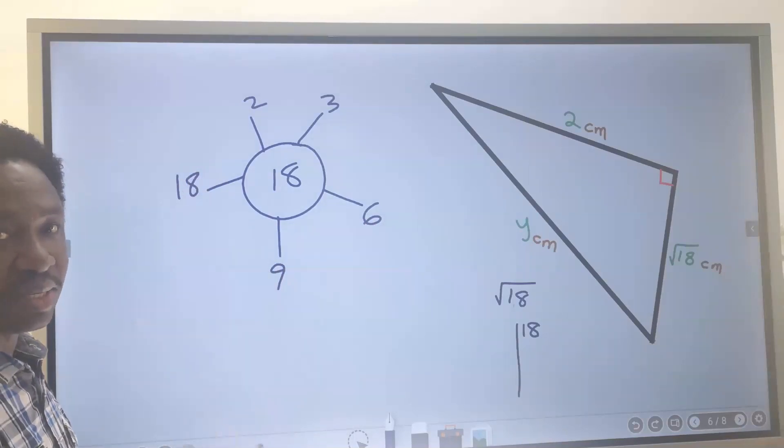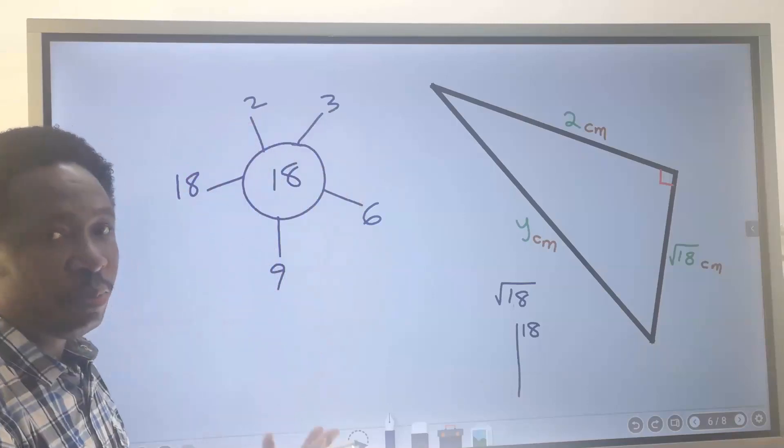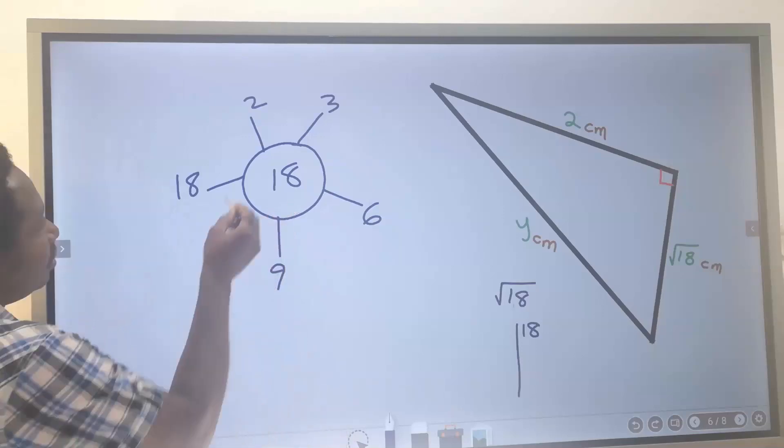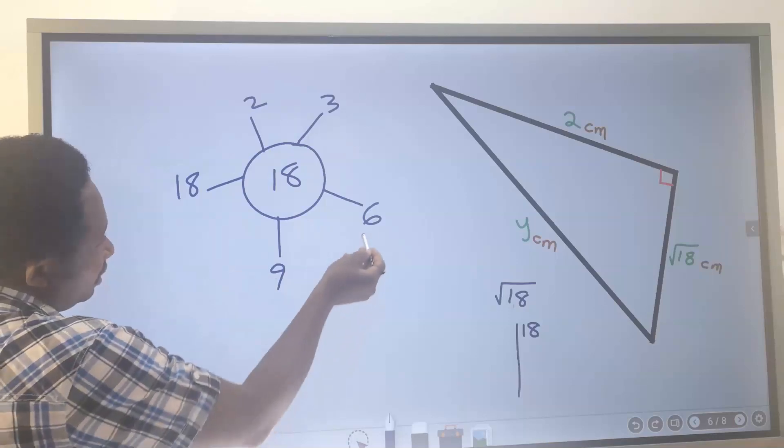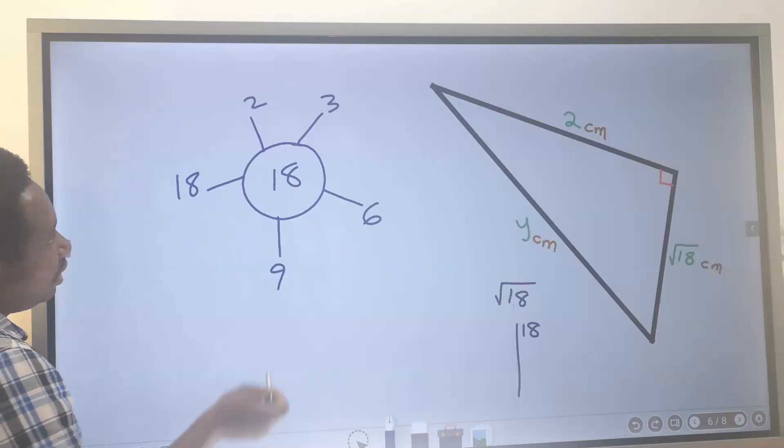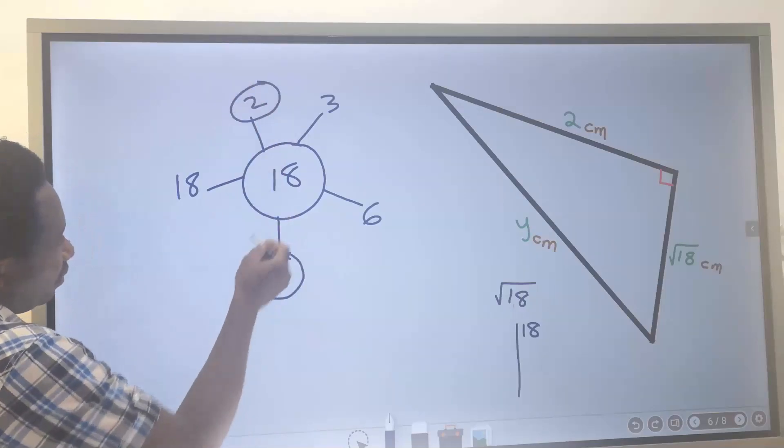Next we ask ourselves which among these factors, when we put them together, will give us 18? 2 times 3 cannot give us 18. 6 times 9 cannot give us 18. It is only 2 times 9 that will give us 18.